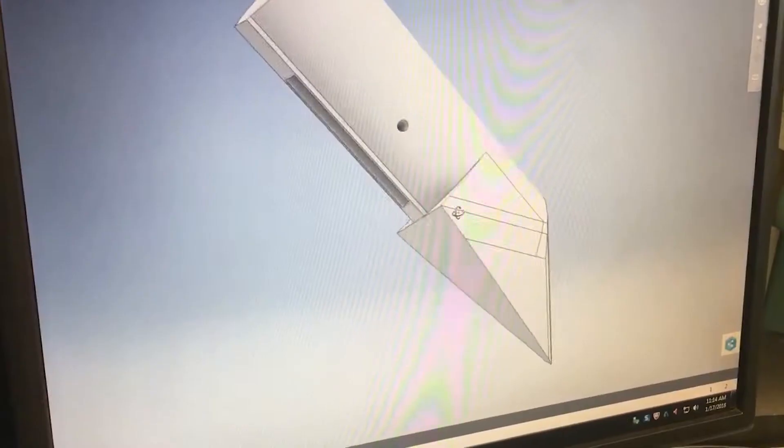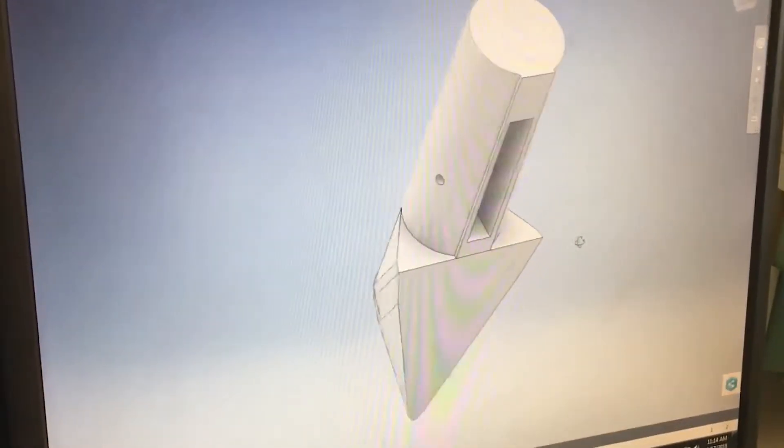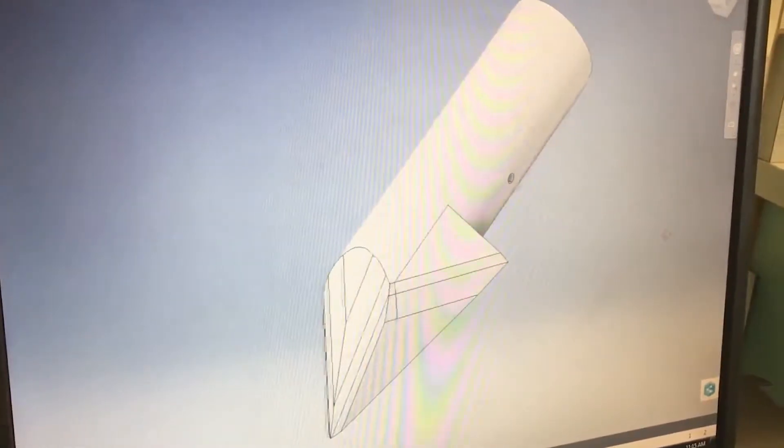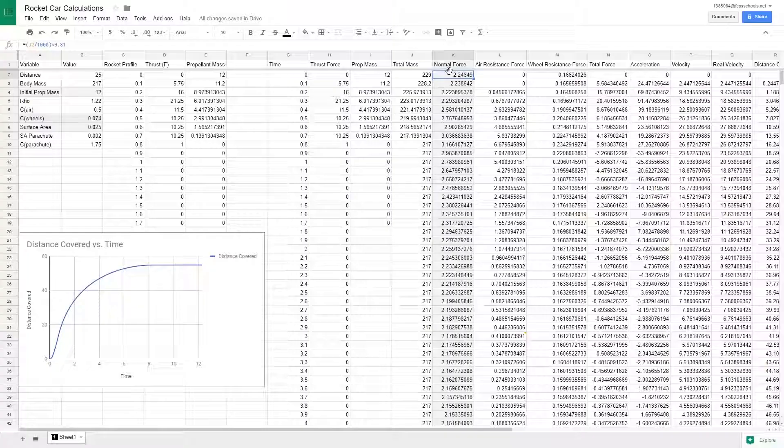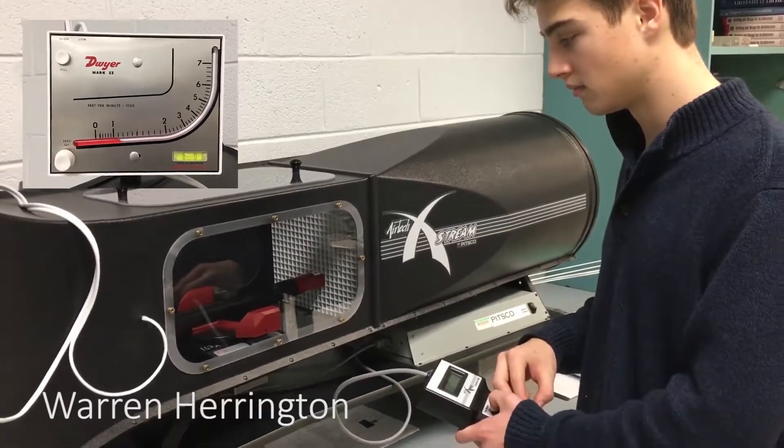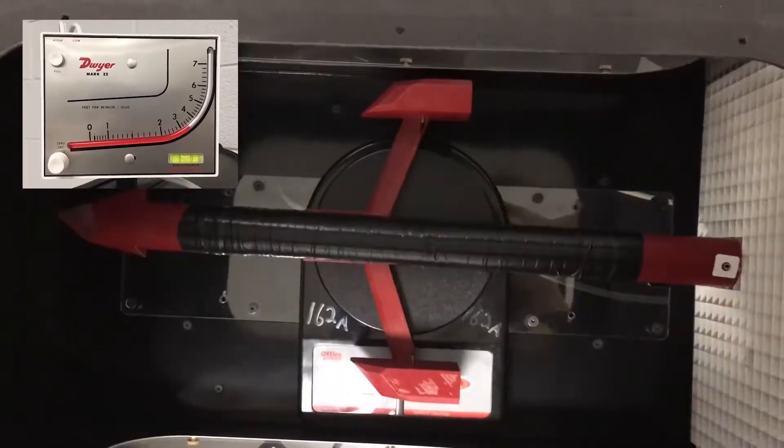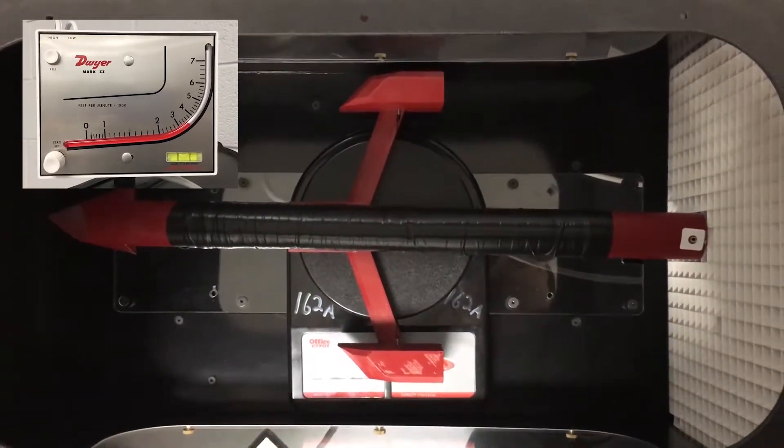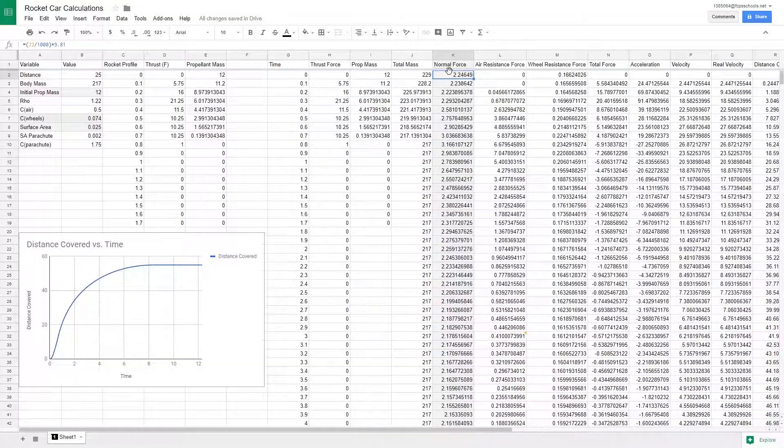For the surface area, we used Inventor's profile selector from the front facing view to find that cross section. For the normal force, we placed our vehicles inside of a wind tunnel and applied different velocities of wind to them so that they experience different normal forces. And using an extrapolation, we found that certain velocities, a certain normal force would be applied to our vehicles.